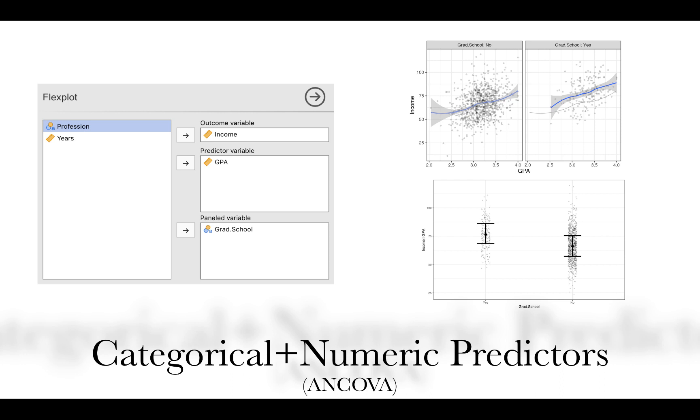Also Flexplot, if you supply it with a categorical and a numeric predictor, like you do in ANCOVA, you have some options here, and Flexplot is making a lot of the graphics possible in the background and just displaying this information graphically. So here are just two examples of what you could display using Flexplot.